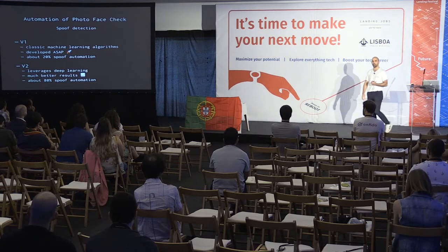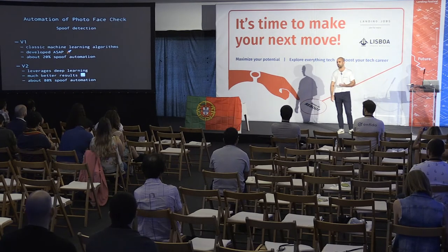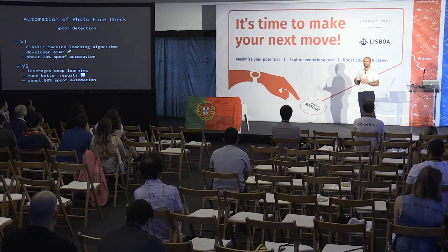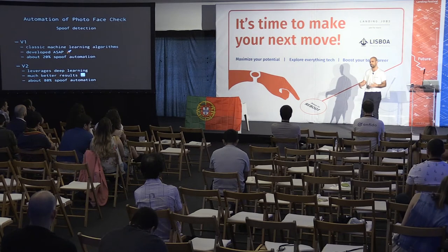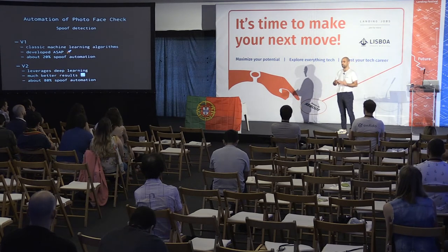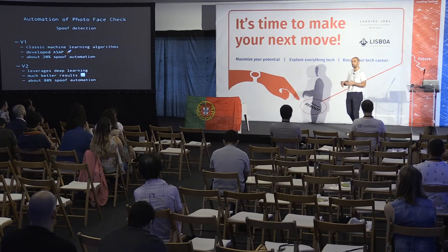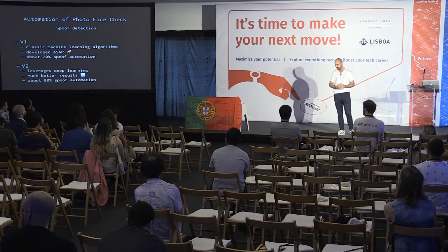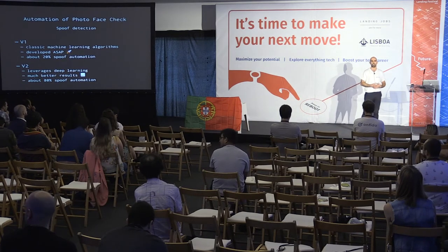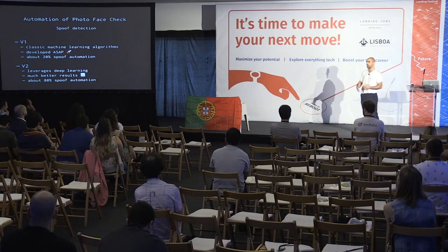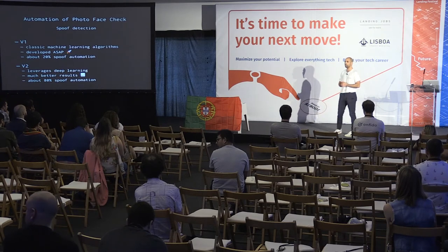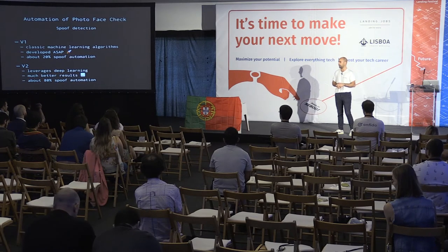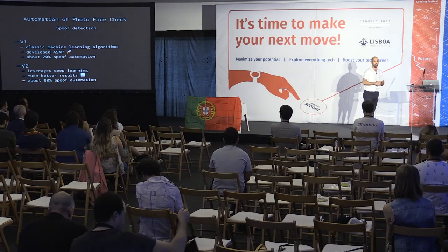We introduced two versions of this. First, V1 leveraged classic machine learning algorithms and was developed very quickly because we wanted to go to market fast. The manual face tool was still being used heavily and we wanted to reduce manual effort. It increased spoofing automation by about 20%, but we knew we could do better. We were already working on V2 when we released V1. V2 worked with state-of-the-art deep learning algorithms and achieved much better results - about 80% automation of spoofs.